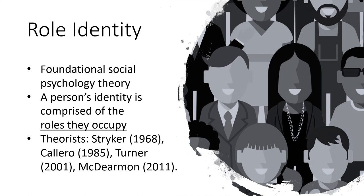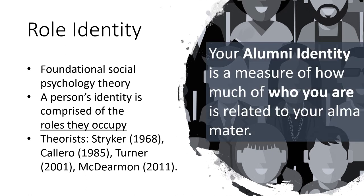Role identity is based on this idea that a person's identity is comprised of the roles that they occupy. For example, you may think of yourself as a daughter or son, a sister or brother, a husband or father, a churchgoer, a basketball player. Any of these things are important to creating your self identity. And what I decided to do was to try to insert alumni into that matrix and build upon some of the work of Travis McDierman to identify alumni identity as a measure of how much of who you are is related to your alma mater.